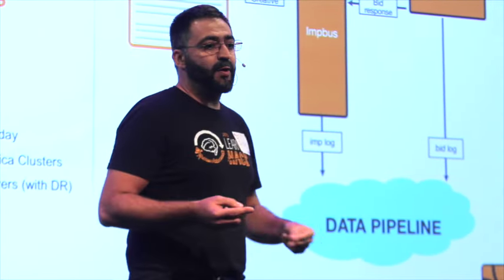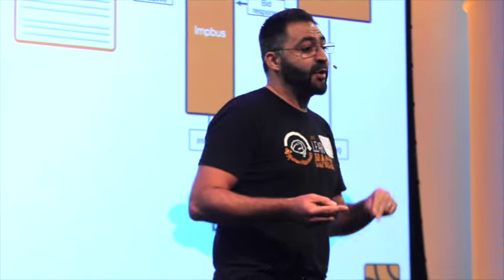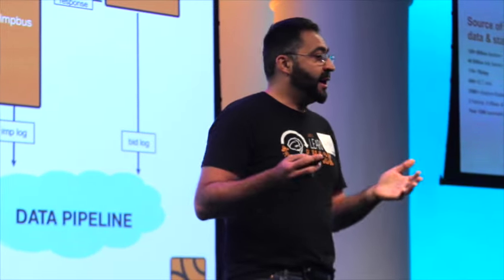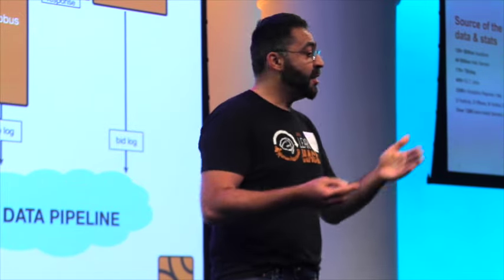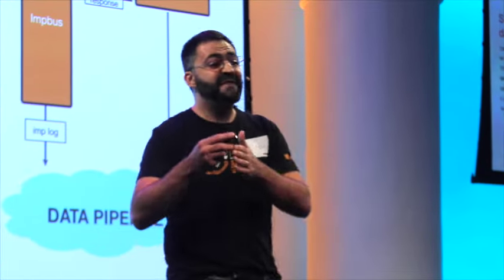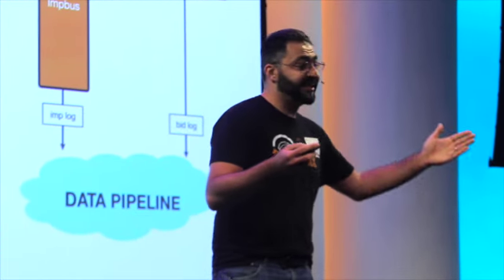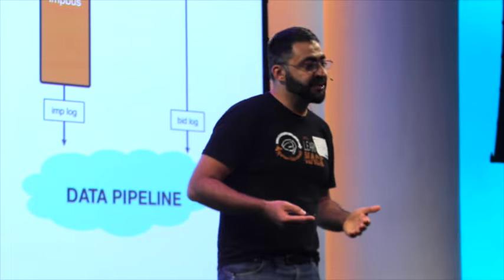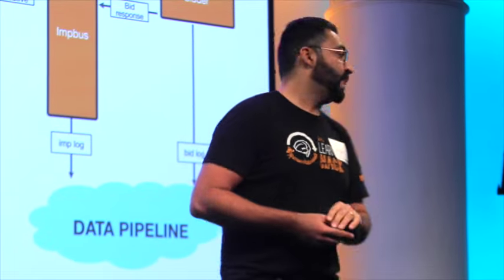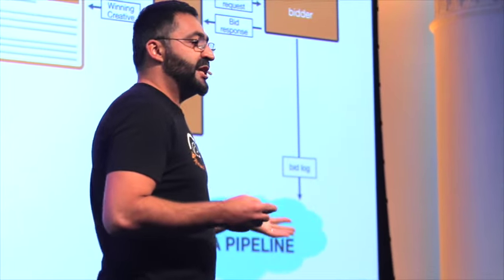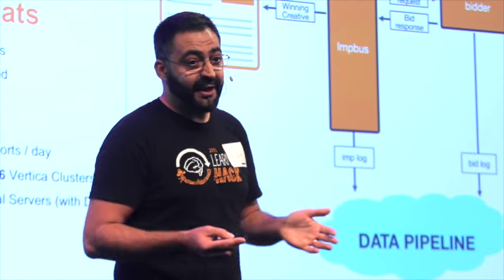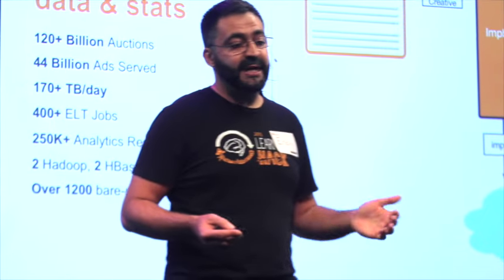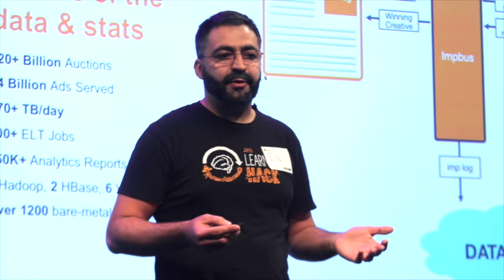We get over a quarter million analytics requests into our platform daily. These requests are basically advertisers asking how their campaign is doing across various dimensions — how is it performing for a given site, placement, creative, and other dimensions — for today, lifetime, or this quarter. Or publishers asking how much they need to pay at end of quarter. These are very complex analytics where we have to respond in seconds. Currently we have two Hadoop, two HBase, and six Vertica clusters in production, and over 1,200 bare-metal servers processing this data continuously.